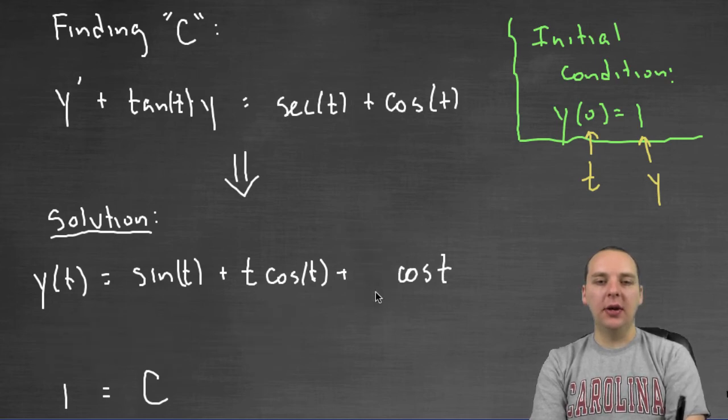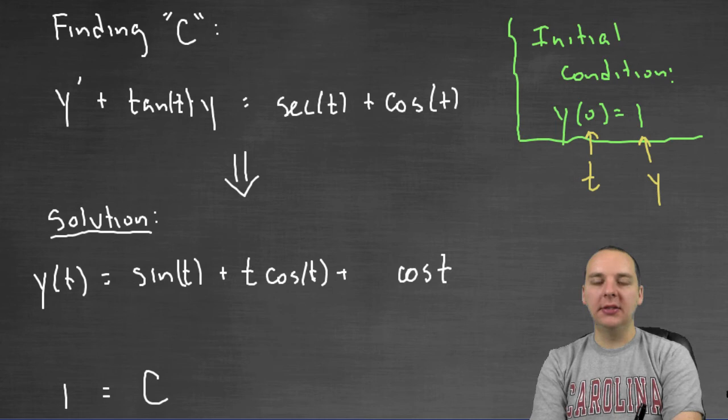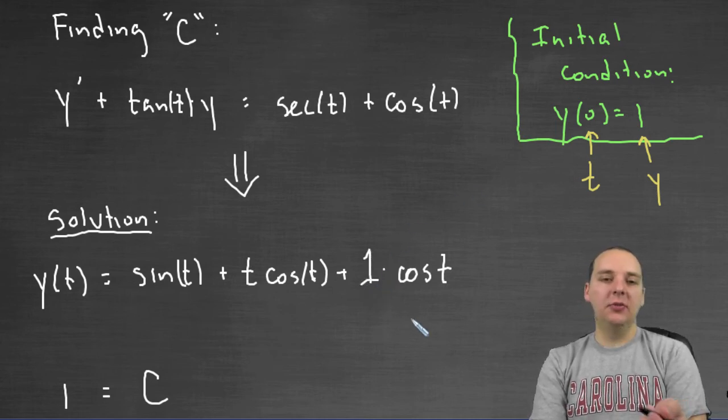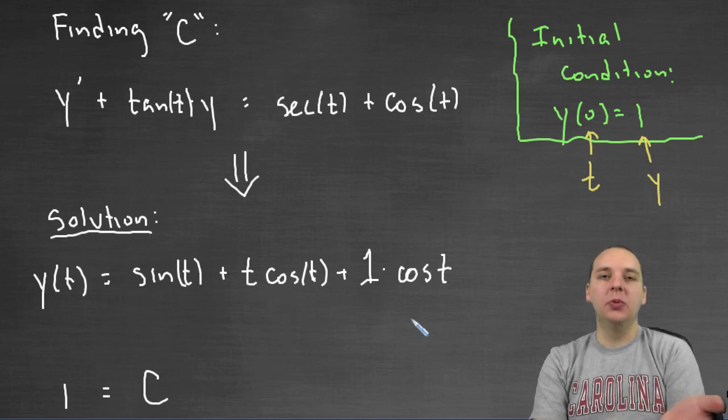Now that I know what our C is, I'll just take that C out and we can replace it with a 1. Or in this case, writing cosine of t times 1 doesn't really help us that much.